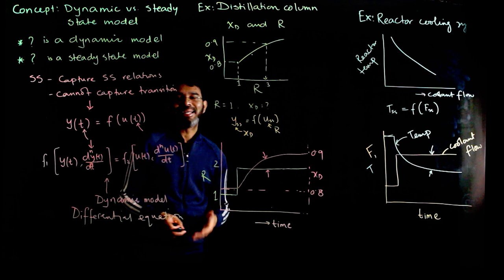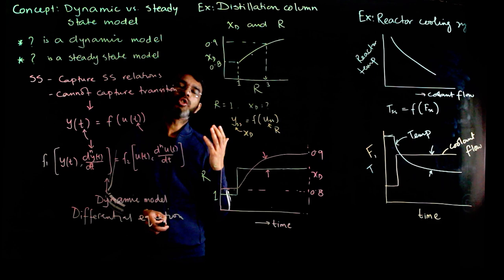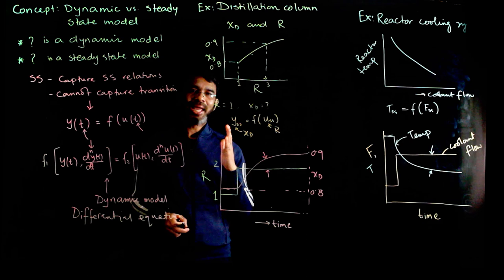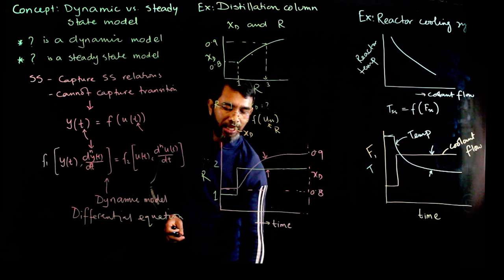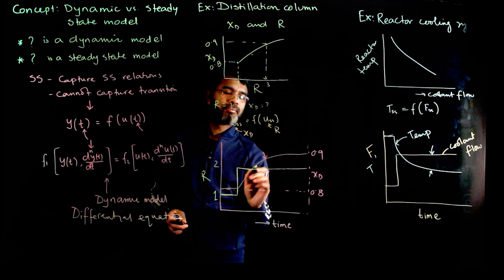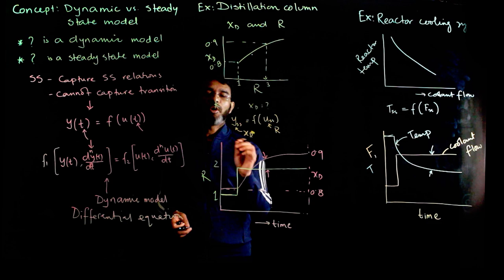To summarize: a steady state model captures the relation between two variables at steady state; a dynamic model captures the transition — if you make a change in the input, how the output changes with time. The input can be changed in any manner, not just a step change, and the model should capture that. That's the concept of dynamic versus steady state models.